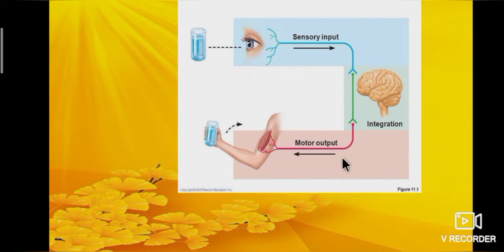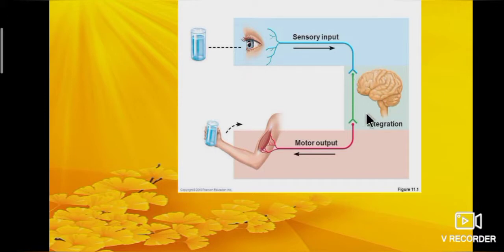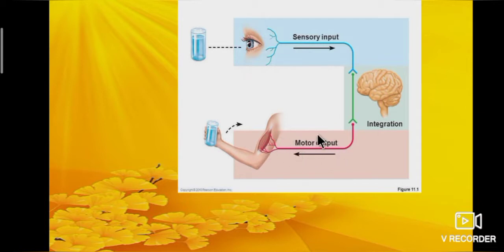For example: I recognize an object and give a signal to the brain — I am the sensory input. The brain performs the integration. The brain then responds and conduction takes place through the muscles — that is the motor output.